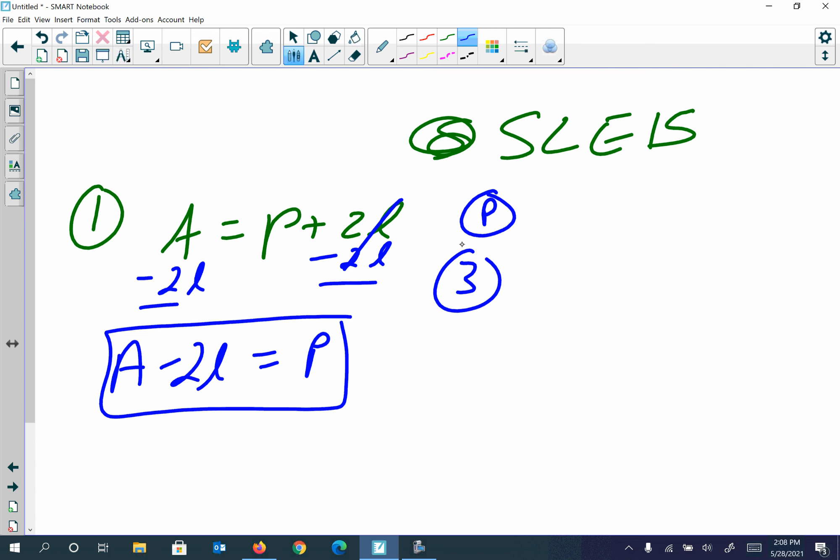Number three, you have F equals MA, a nice physics equation. We want to get A by itself. M and A are being multiplied together, so in order to undo multiplication, you have to divide. So you get A is equal to F over—boy, if I could write right now, it would be good—A is equal to F divided by M.